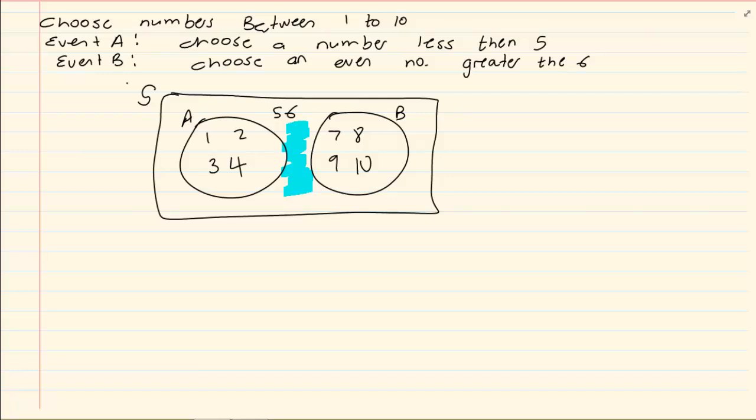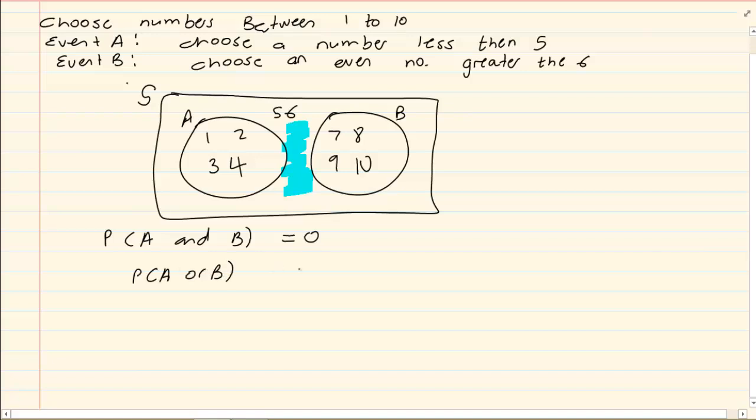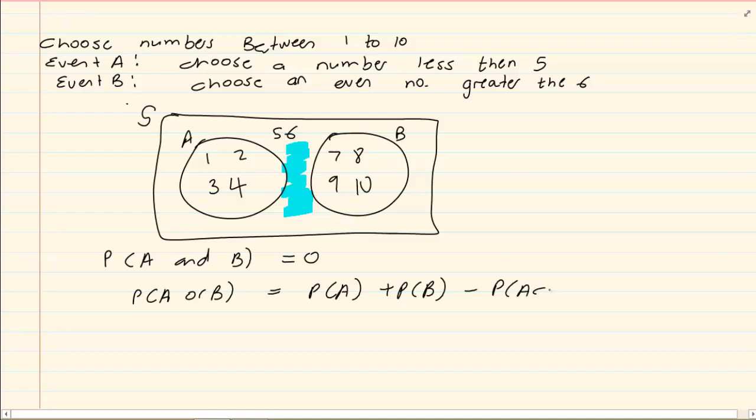We go and we say okay, to prove that something is mutually exclusive, we need to prove that P of A and B is equal to 0. Now I know that P of A or B is equal to P of A plus P of B minus P of A and B. Now P of A is 4 over 10, P of B is 4 over 10, and when I look at it P of A or B is 8 over 10 minus x. By method of solving you got x is equal to 0. So the event is mutually exclusive.